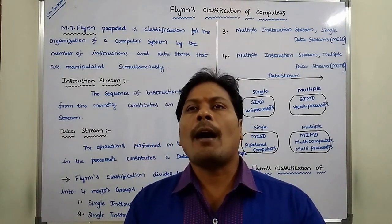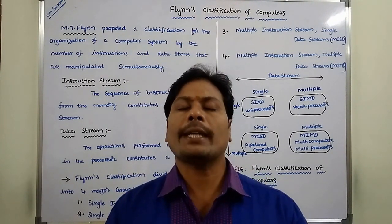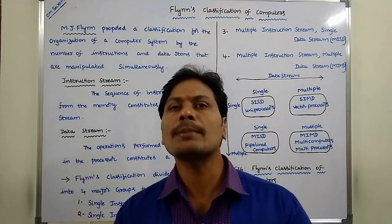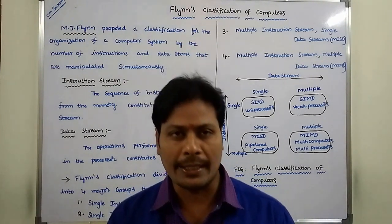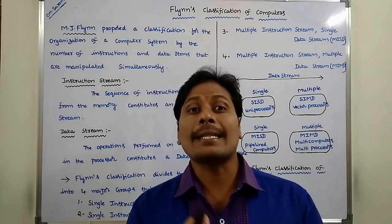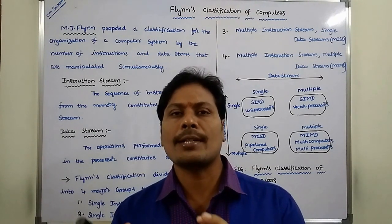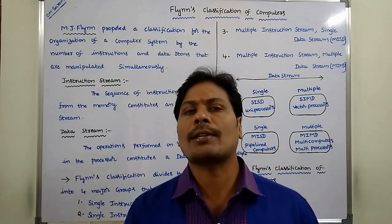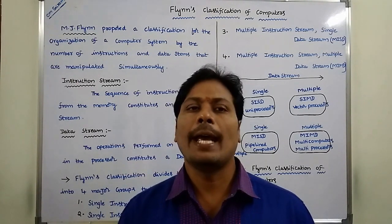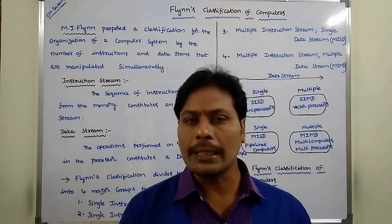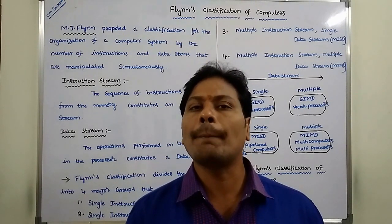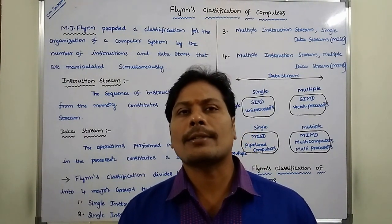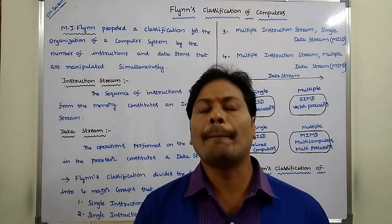Flynn classifies the computers into four categories based on the number of instructions and data items that are manipulated simultaneously. First is SISD, Single Instruction Stream and Single Data Stream. Second is SIMD, Single Instruction Stream and Multiple Data Streams. Third is MIMD, Multiple Instruction Stream and Multiple Data Stream. Fourth is MISD, Multiple Instruction Stream, Single Data Stream.